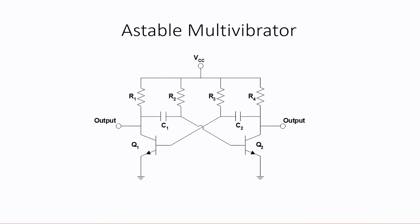Now let's take a look at our first circuit, the astable multivibrator. The purpose of an astable multivibrator is to turn DC into square waves. The astable multivibrator is free-running, so it has no stable states.